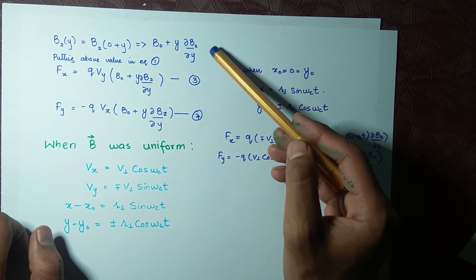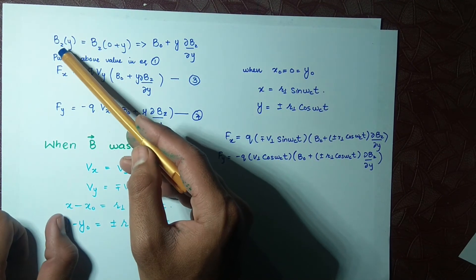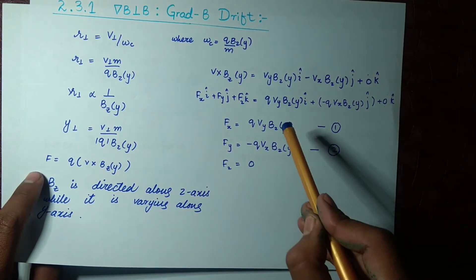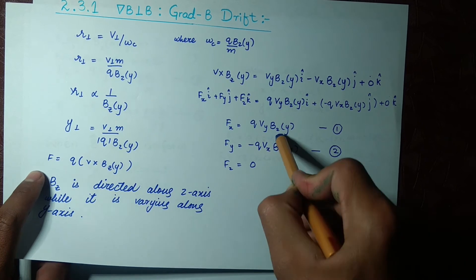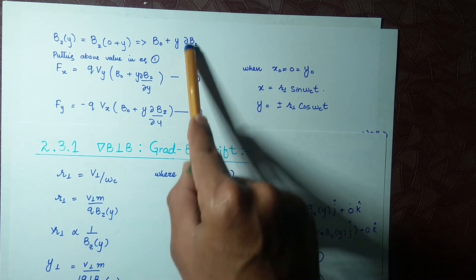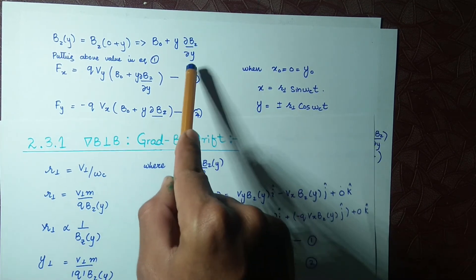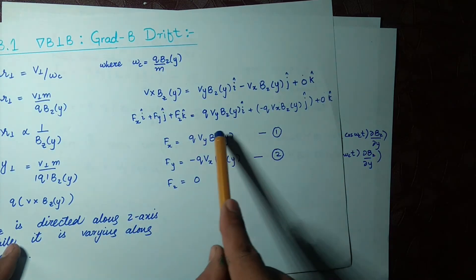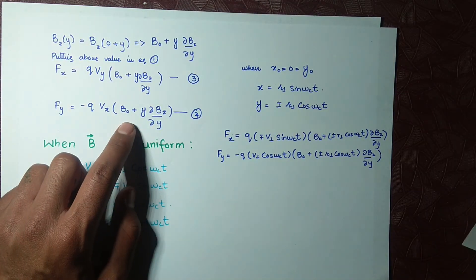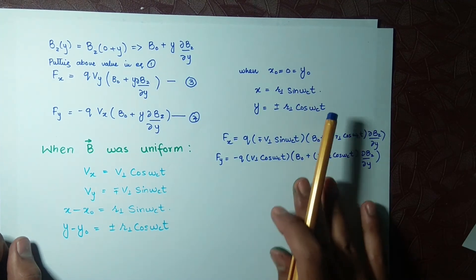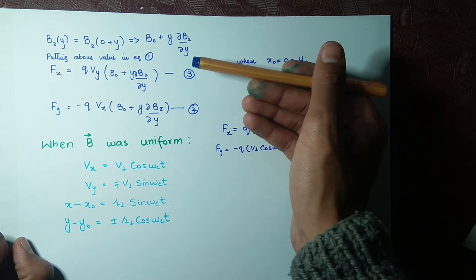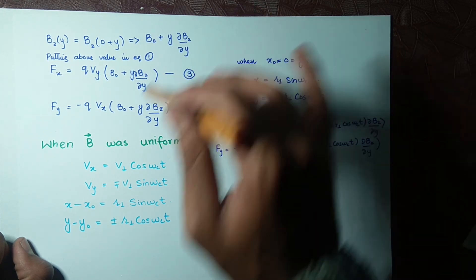Putting this expression for Bz — which equals B0 plus y·(∂Bz/∂y) — into Equation 1 and Equation 2, we will have Equations 3 and 4. You can see Equations 3 and 4 on your screen after substituting these values.